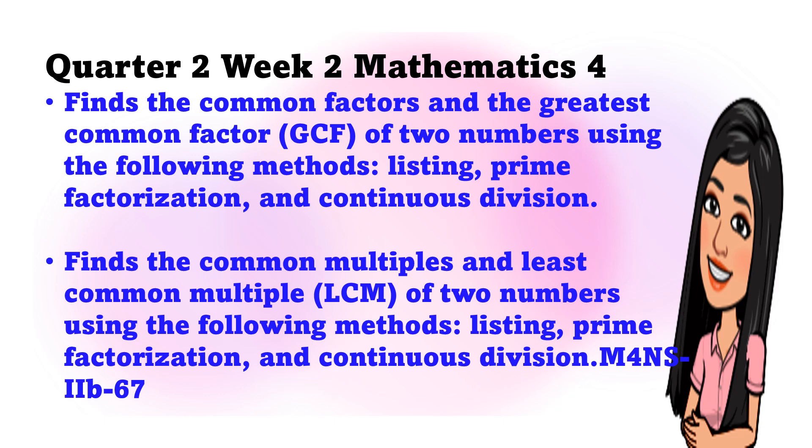Objectives: Finds the common factors and the greatest common factor (GCF) of two numbers using the following methods: listing, prime factorization, and continuous division. Second, finds the common multiples and least common multiple (LCM) of two numbers using the following methods: listing, prime factorization, and continuous division.